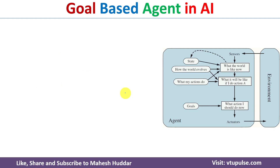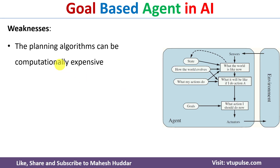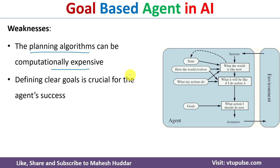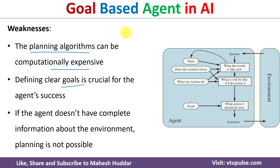The weaknesses of goal-based agents are that the planning algorithms are complex and computationally expensive, because we need a planning algorithm to select an action leading to the goal and implementing those algorithms is costly. Additionally, defining a clear goal is crucial, and to use goal-based agents we need complete information about the environment — meaning they can only be used in a fully observable environment.